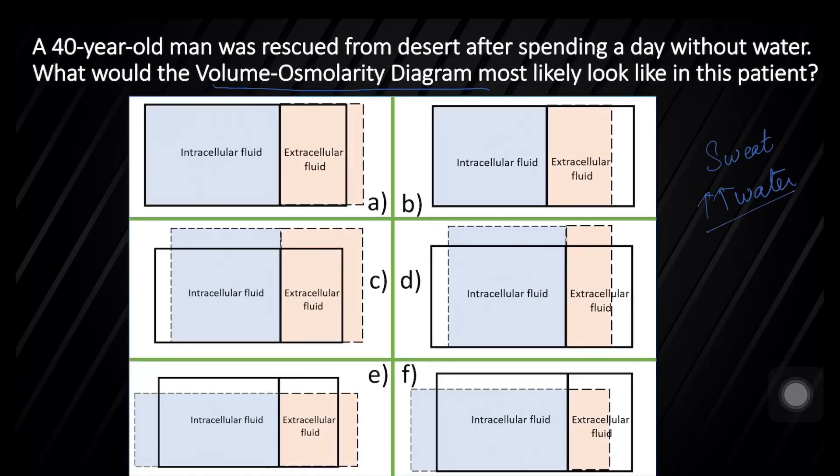Sweat is hypoosmotic. It contains less number of solutes than the body fluid. So the remaining fluid in the ECF compartment would be more concentrated. So the choice is D, a hyperosmotic volume contraction. The water will also move out of the cell and the cell will begin to shrink.